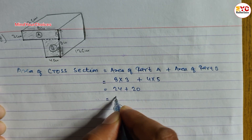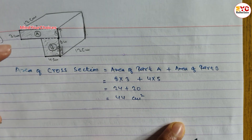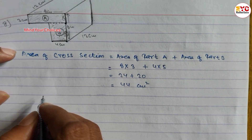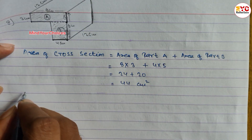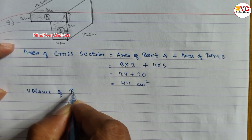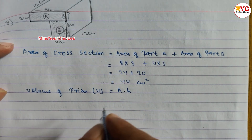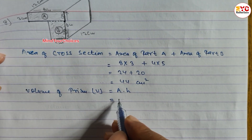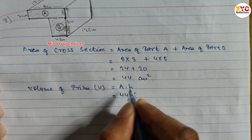Now we have to find out the volume of the prism. The volume of prism formula is area of cross section into height. Area of cross section is 44, so we write 44 into height.